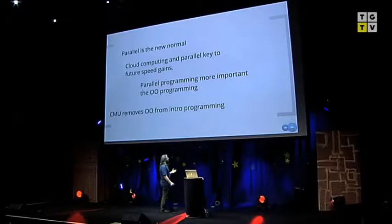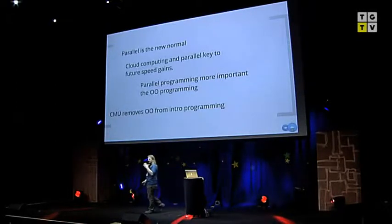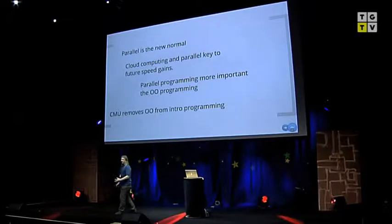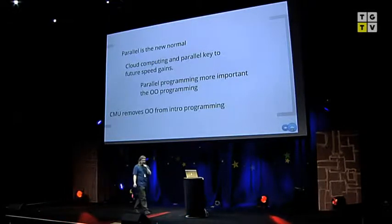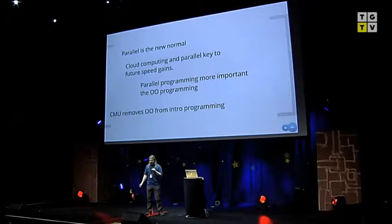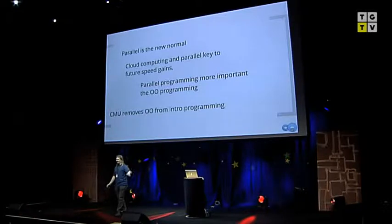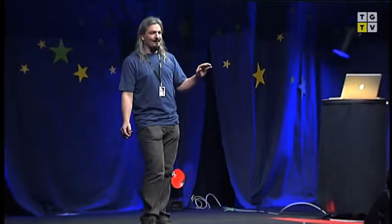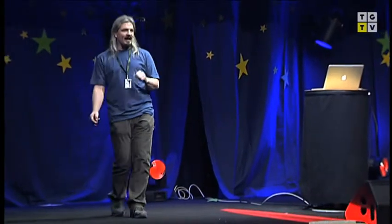We already know that we've done this for graphics. Very early on, you've now got thousands of processes in your GPU. Interestingly, a number of universities have started saying, well, you know that whole OO programming thing? That's awfully like 2000s. We're going to drop OO and include parallel instead. CMU has dropped their OO at first year and put in parallel programming instead. That's going to be the new normal.